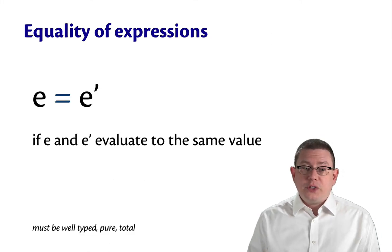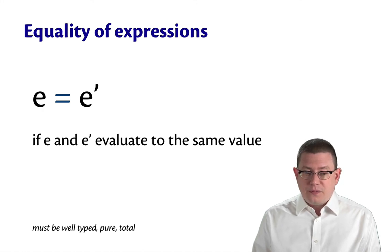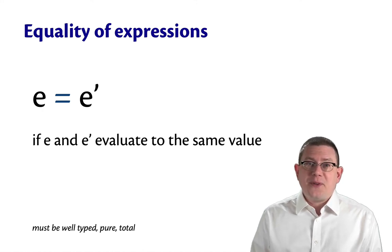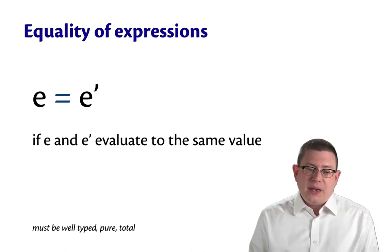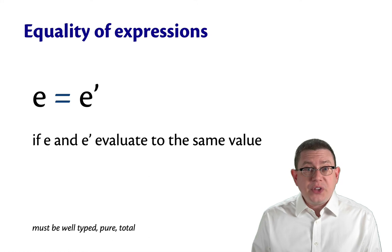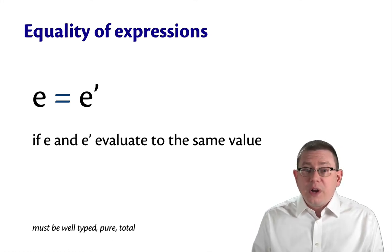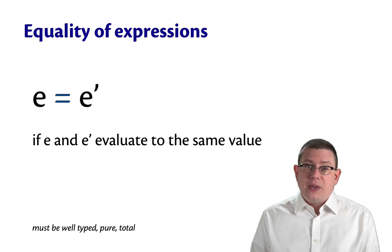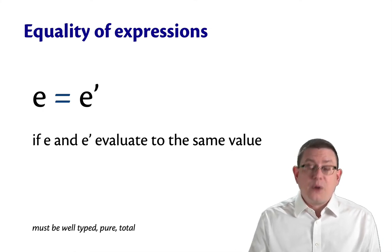So two expressions, e and e prime, are equal if they evaluate to the same value. Now there is some fine print here that I have to give as a caveat, but I don't want to focus on it. These two expressions must be well-typed. We're not going to think about badly typed expressions. They must be pure in the sense that I talked about before, and they must be total, which is to say they must terminate and not raise exceptions.